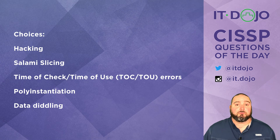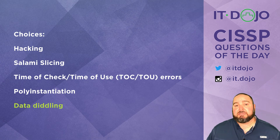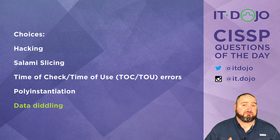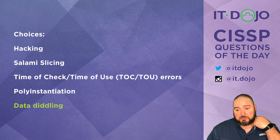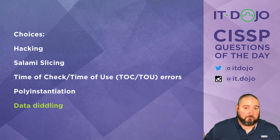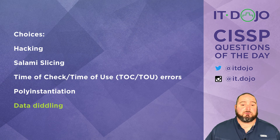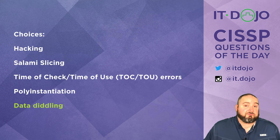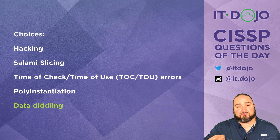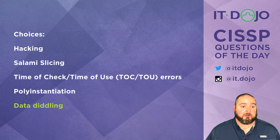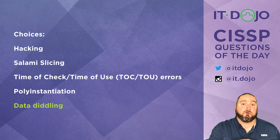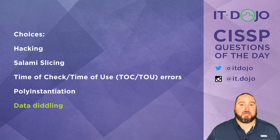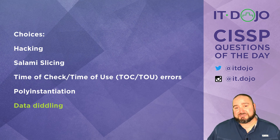Finally we come to the answer we're looking for: data diddling. Data diddling is the idea of going in and making changes to data. It's frequently associated with doing it via computer, but you can diddle data in paper-based or digital form. The idea here is that you make a change to the data, the data is read, and then you change it back again — or you may not change it back depending on how you're diddling. In our particular instance, we're changing a known good value to a bad value, letting that value be used, and then changing it back in an effort to hide the evidence that the change was made.